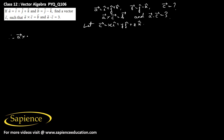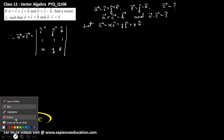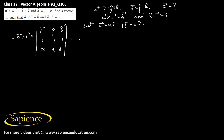Therefore, a × c equals the determinant of i, j, k with components of a being 1, 1, 1 and components of c being x, y, z. Expanding along the first row, this equals î(z - y) - ĵ(z - x) + k̂(y - x).